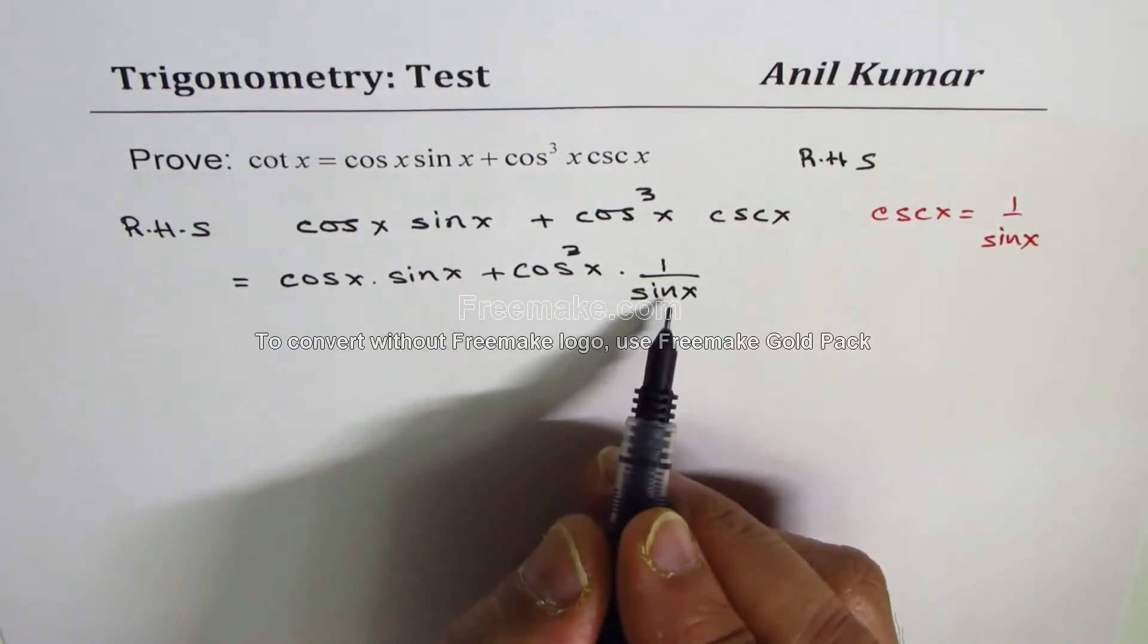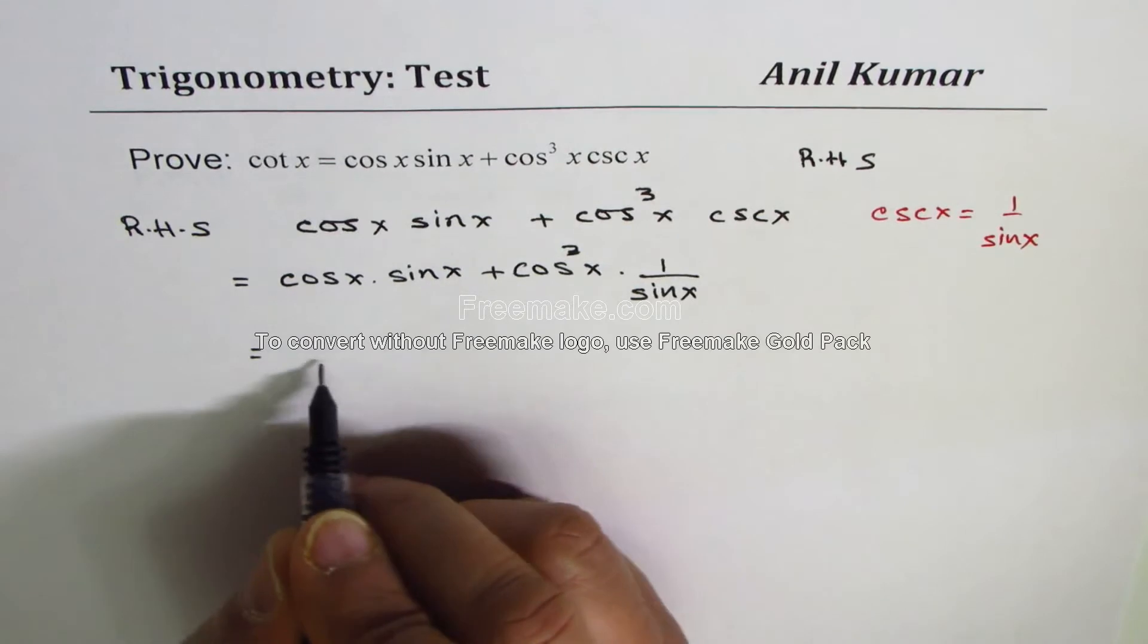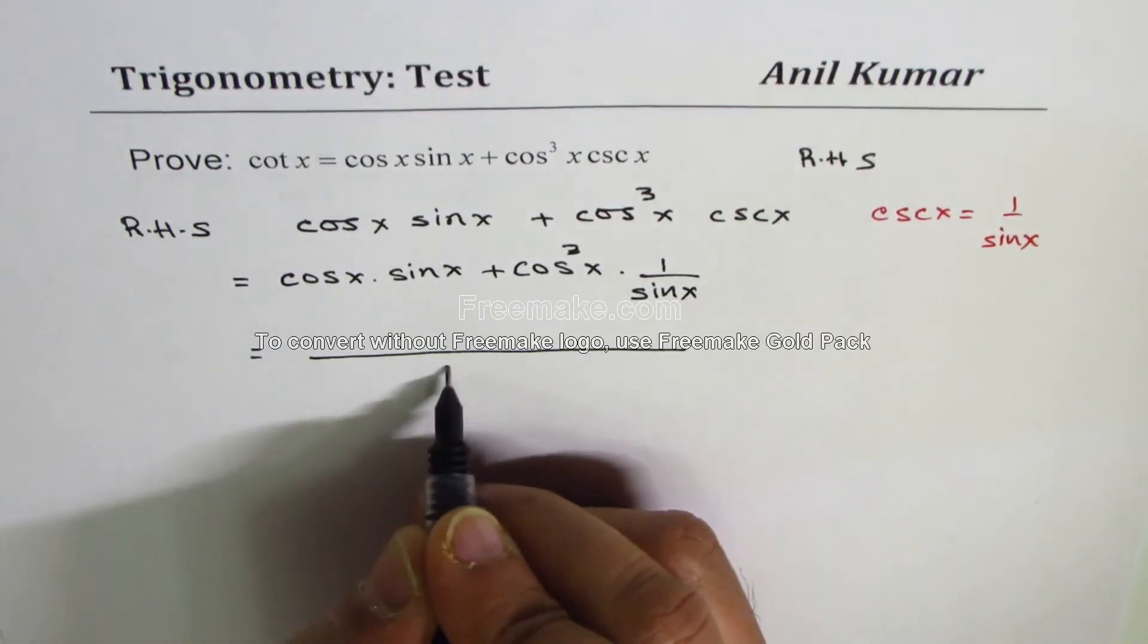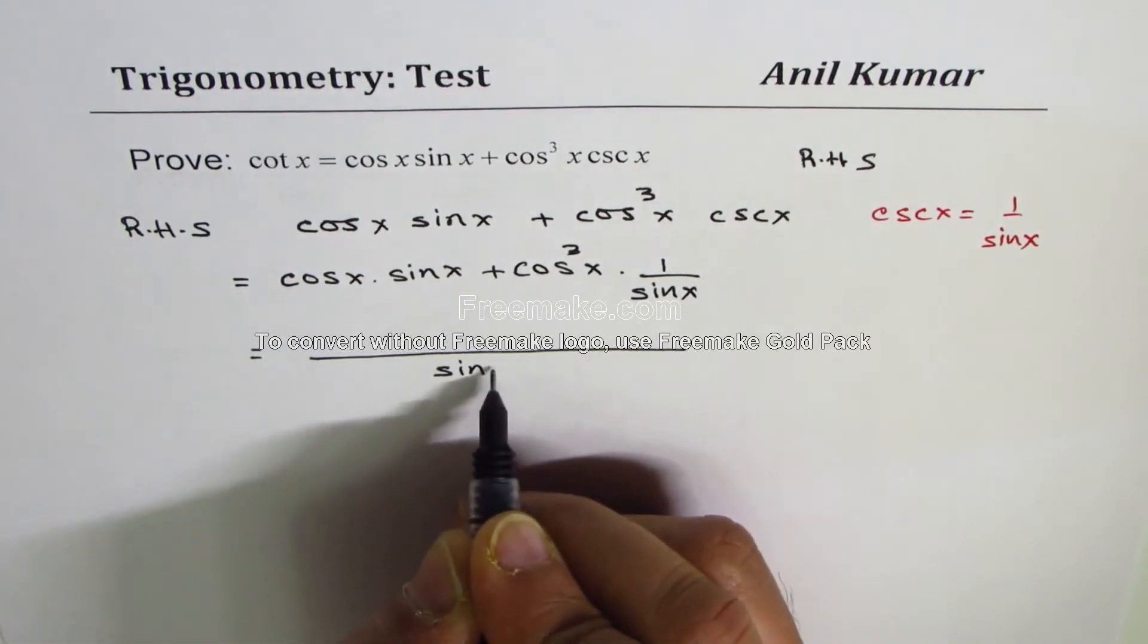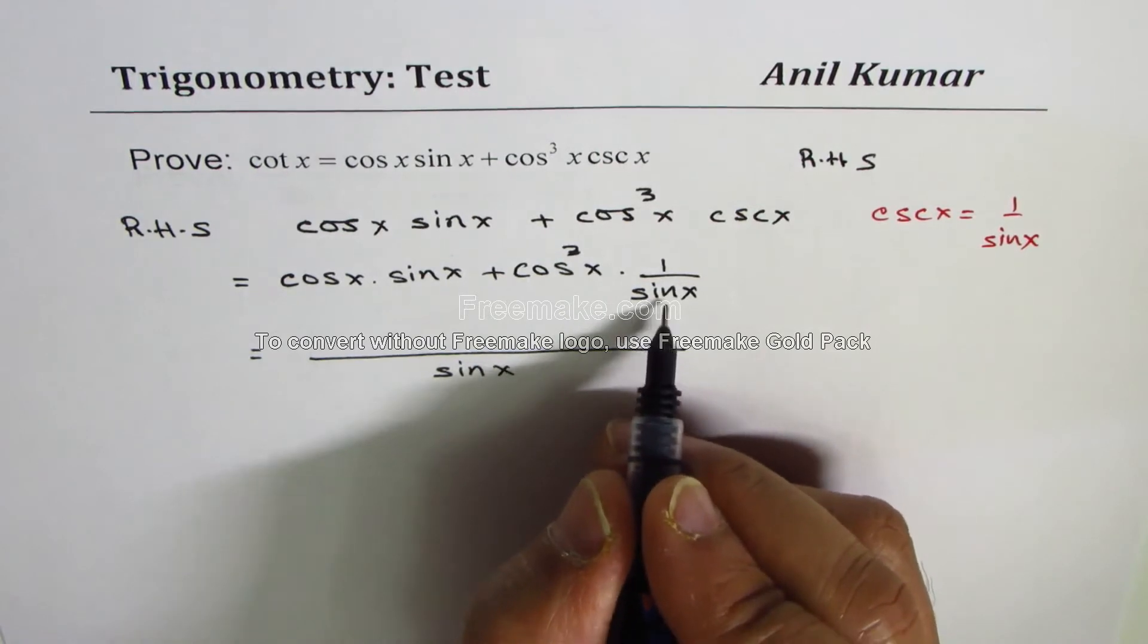Since we have sin x in the denominator, let's take a common denominator and combine the terms in the numerator. Sine x gets cross-multiplied, giving us cos x times sin² x plus cos³ x.